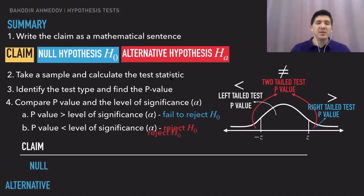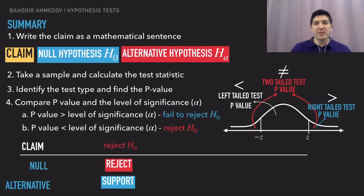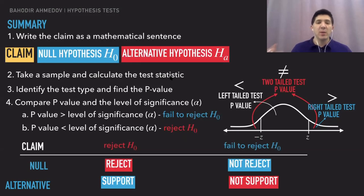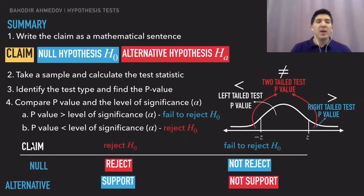If the claim is the null hypothesis and the null hypothesis is rejected, we're going to reject the claim. If the claim is the alternative hypothesis, we're going to support it, and vice versa. If the null hypothesis is not rejected, we are not going to reject the claim if it is the null hypothesis, and we're not going to support the claim if the claim is the alternative hypothesis.